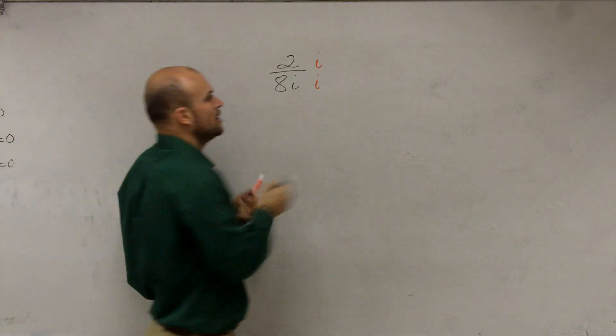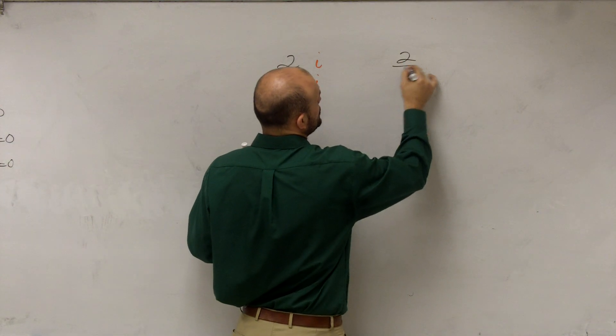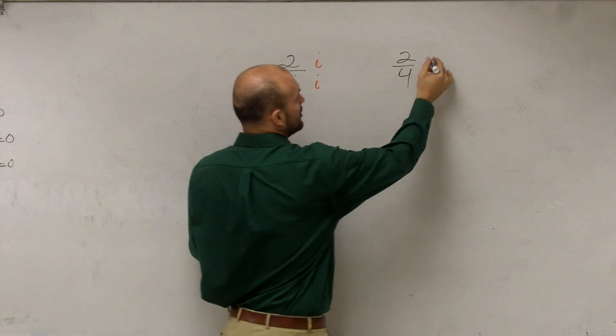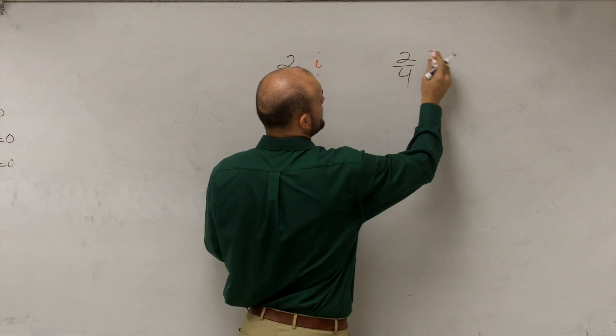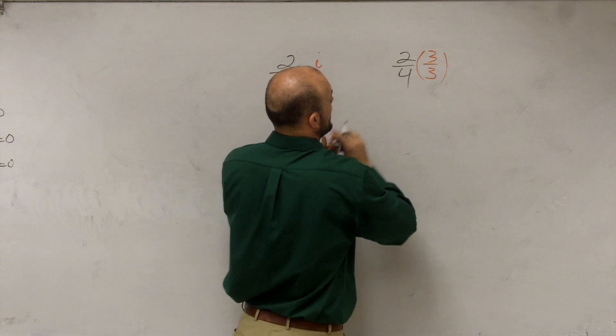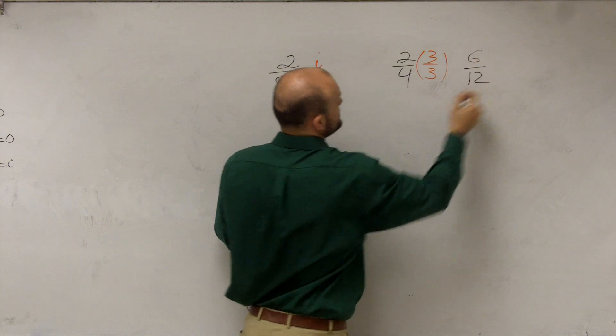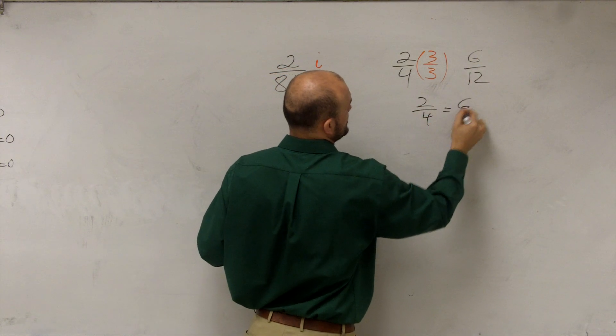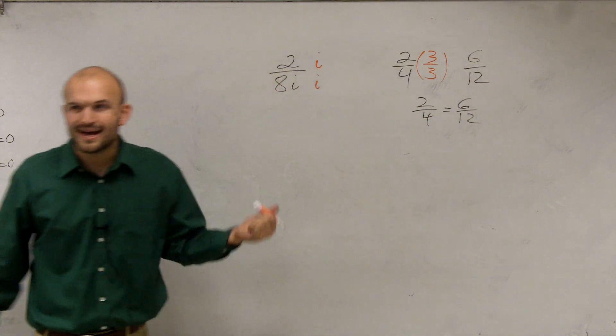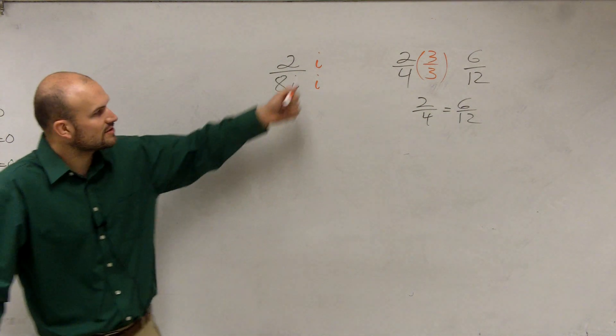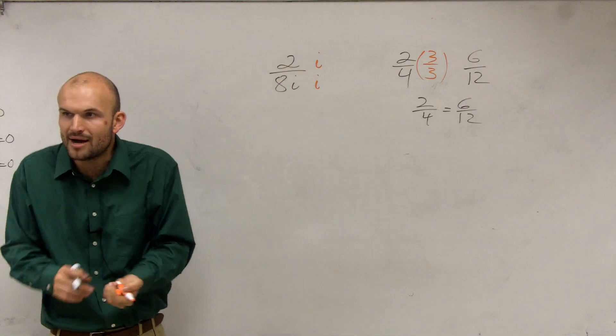And we can do that because we know that if I said 2 fourths, and if I multiply by 3 over 3, that produces 6 twelfths. Well, is 2 fourths equal to 6 over 12? Yeah, right? That's okay. So as long as you multiply by the same number on top and bottom, you're keeping it mathematically equivalent.